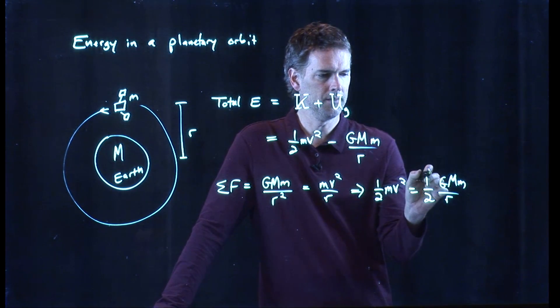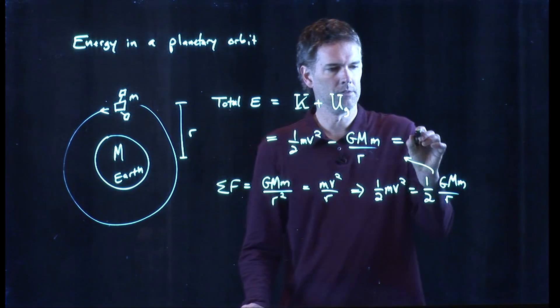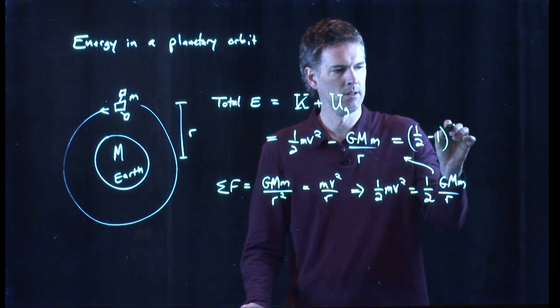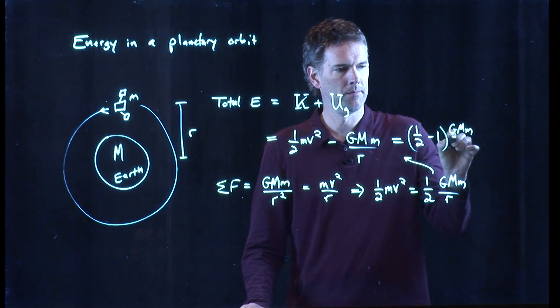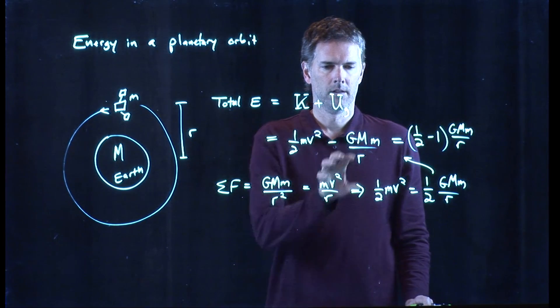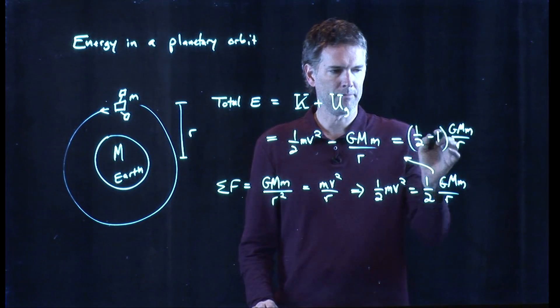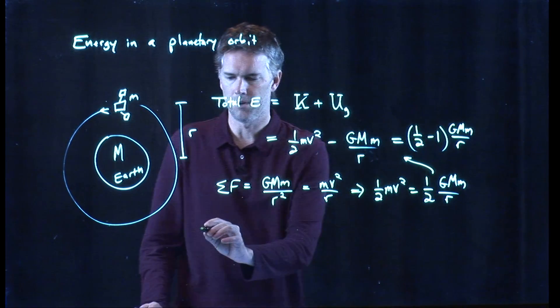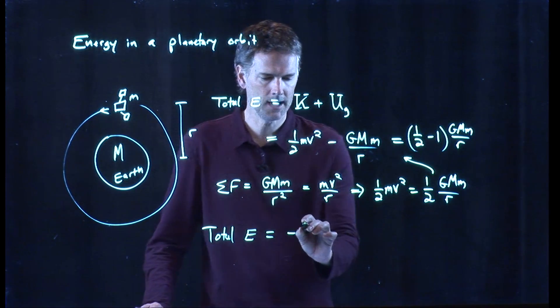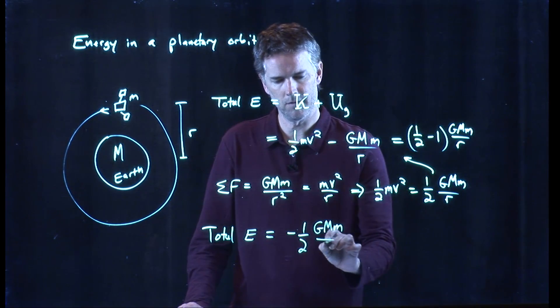Aha! And this thing we can plug back into this equation. And so the total energy becomes what? It is one half minus one GMm over r. I get a half from this term. That goes here. I get this guy, which becomes the one. And so a half minus one is, of course, negative a half. So what's the total energy? It is minus one half GMm divided by r.